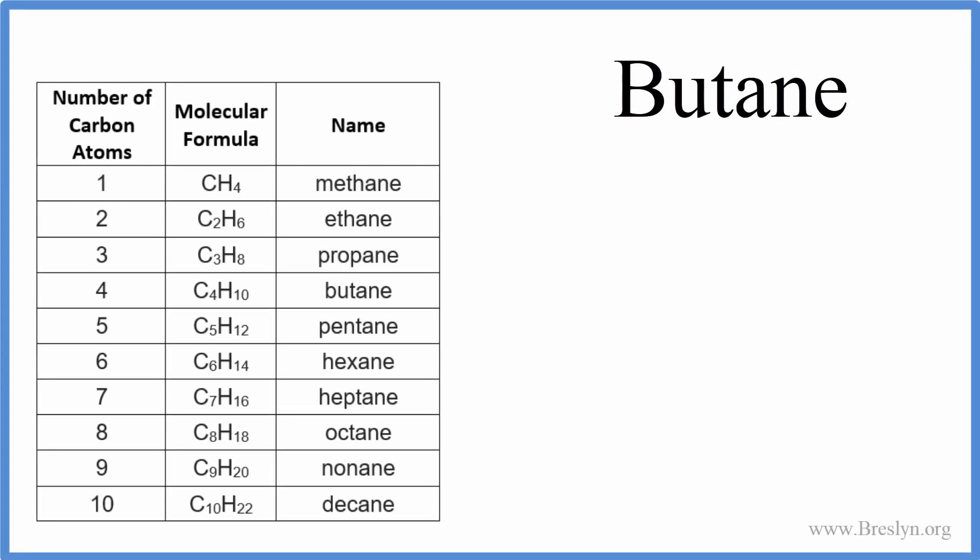To write the formula for butane, we know that it's an alkane. Alkanes — ending in '-ane' — are made up of carbon and hydrogen, and they have only single bonds. So butane's formula is C4H10, as shown on our chart here.